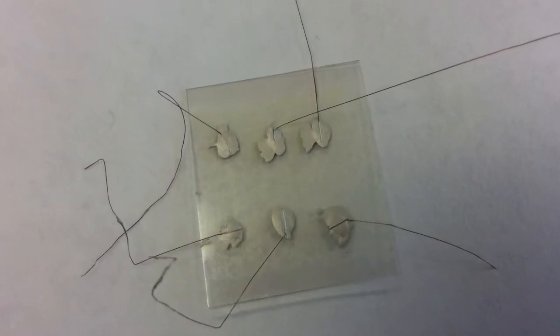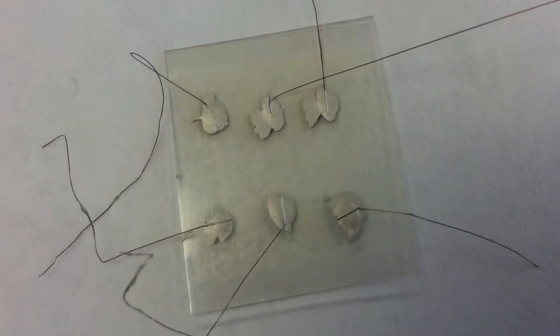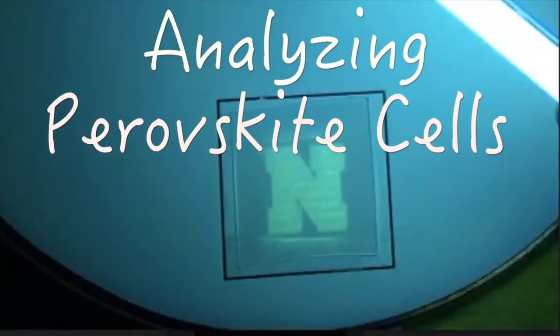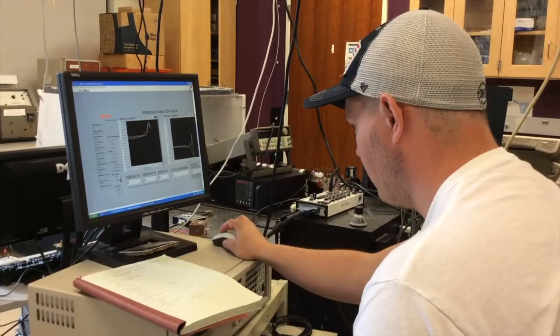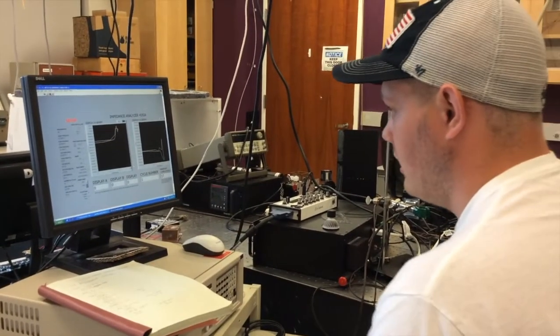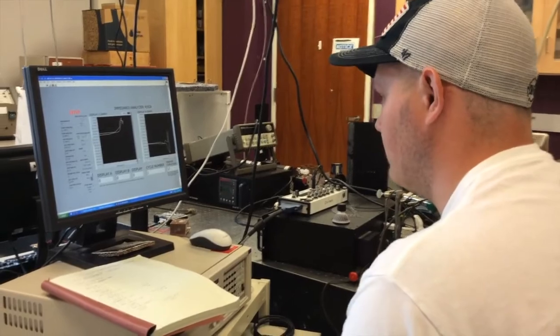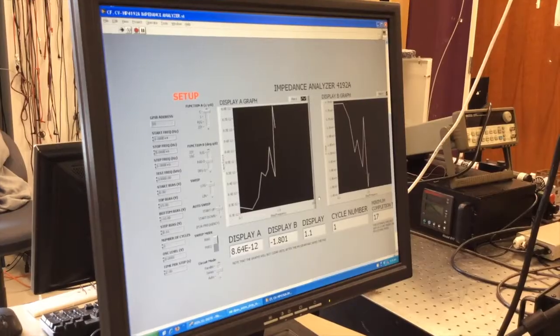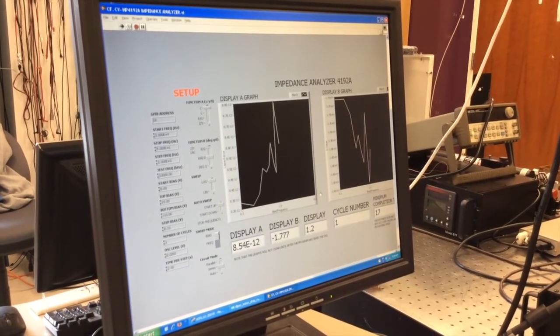After we print out the films and let them dry, we place six silver contacts, and then I hand it over to Ben so he could do IV and CV testing on them. IV is the current as a function of voltage, and CV is the capacitance as a function of voltage. As the current increases, we should see the resistance decrease.